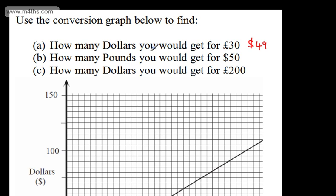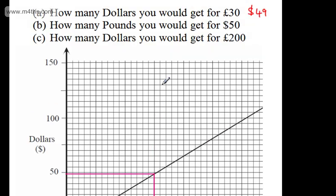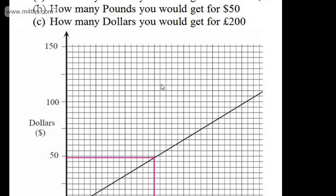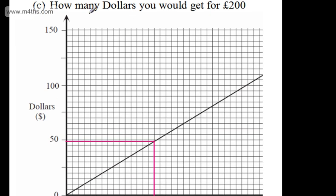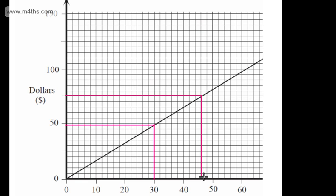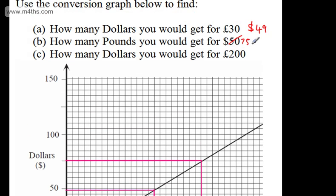We now want to find how many pounds we would get — let's change the question to $75. So how many pounds would we get? We locate $75, read across, and drop the line down. That looks to be £46. So give or take, that's £46.